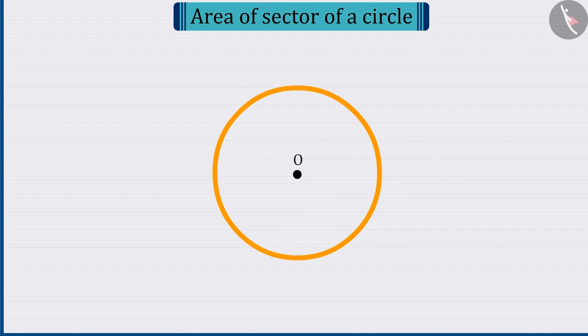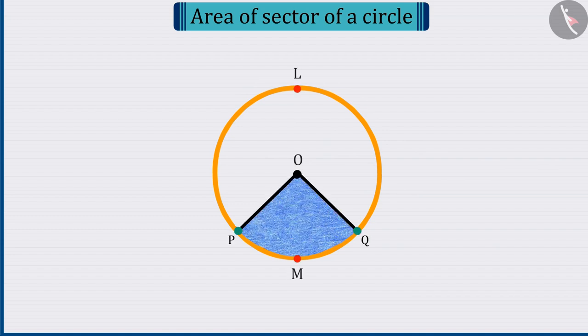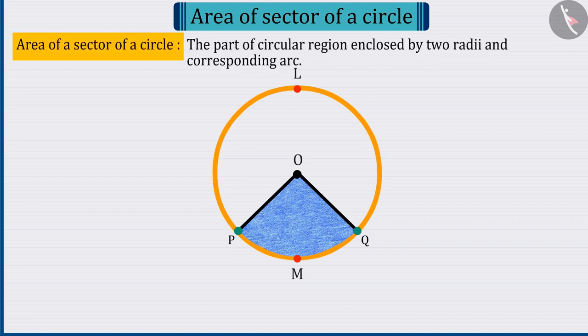Let's move the discussion forward. What do you understand by the shaded part of this circle? Well done! We had studied in the previous class that the part of the circle surrounded by two radii and corresponding arcs is called the sector of that circle.